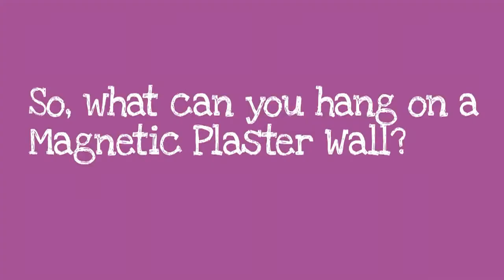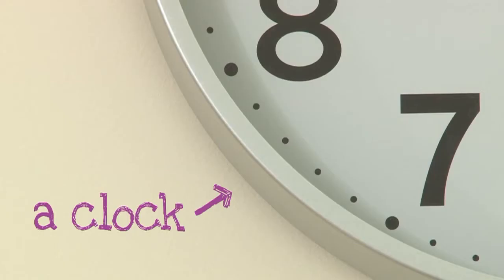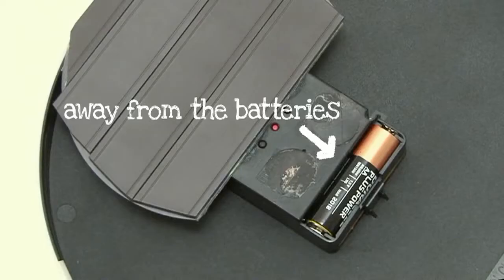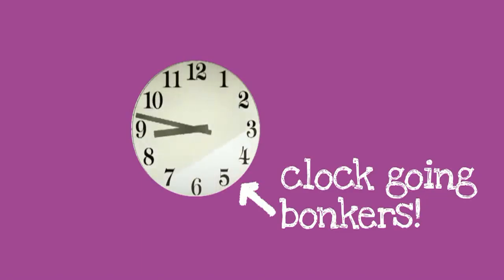First up was hanging a clock on a wall. Basically, all we did was put a few magnetic strips on the back of the clock, but not too close to the batteries, otherwise the clock would go bonkers.